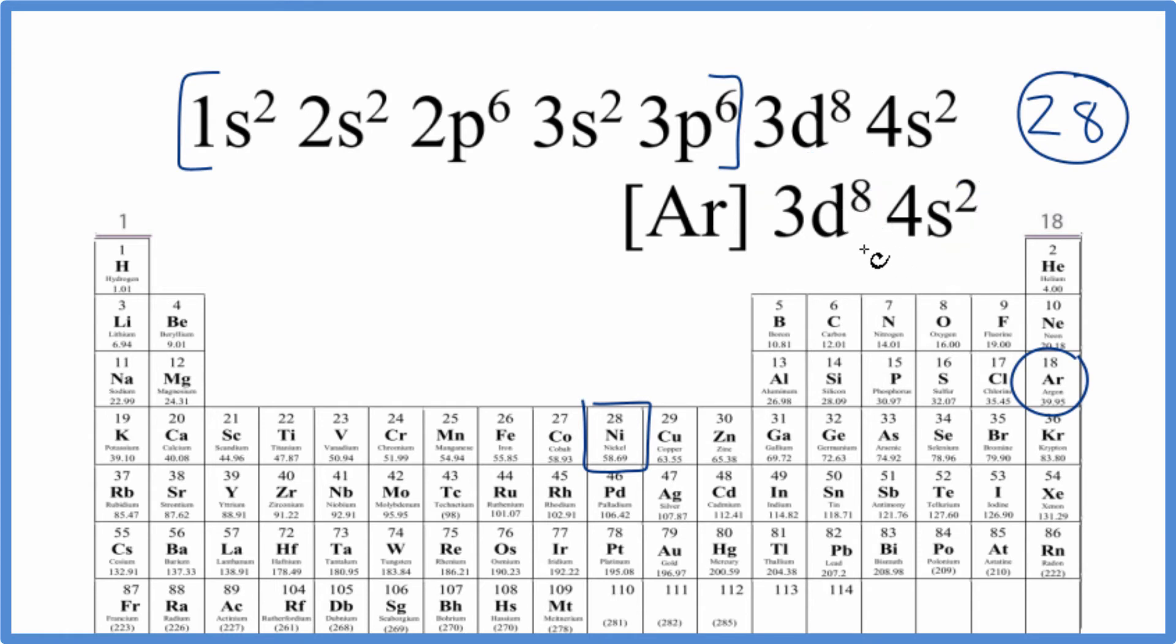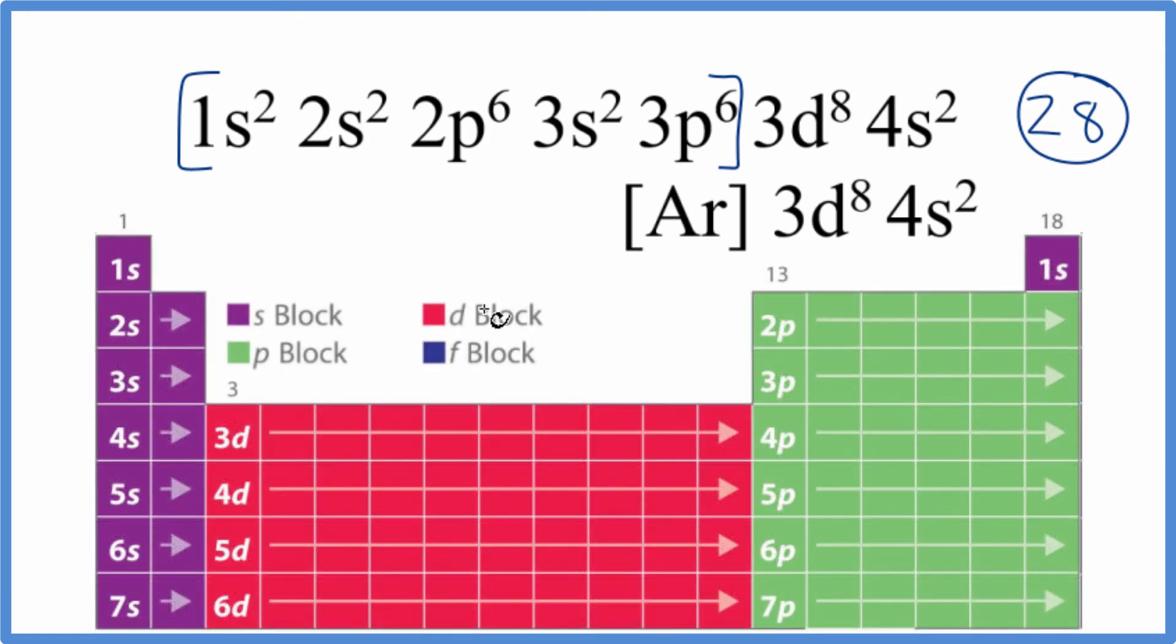So the second way to do this is look at the periodic table broken up into orbital blocks. We're looking for the element here that ends in 3d⁸4s². These are the valence electrons for nickel.